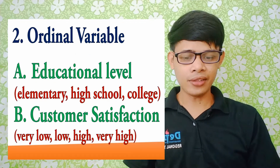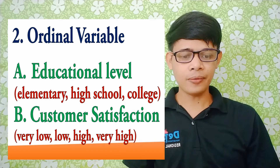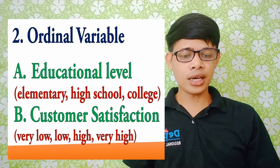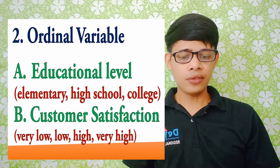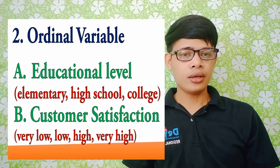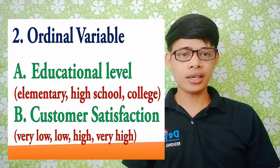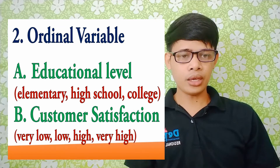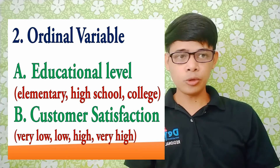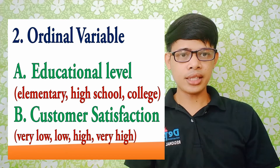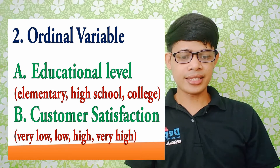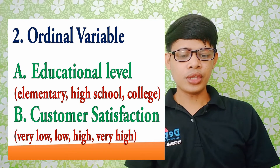Examples of ordinal variables: number one, educational level. For educational level, you can rank the level obtained by a person as elementary, high school, or college. You can see there is an order — elementary is the first rank, high school is the second rank, and college is the third rank. You must see to it that when you identify your variable, you are aware whether it can be ranked or ordered, because that is the point at which you identify whether a variable is nominal or ordinal.